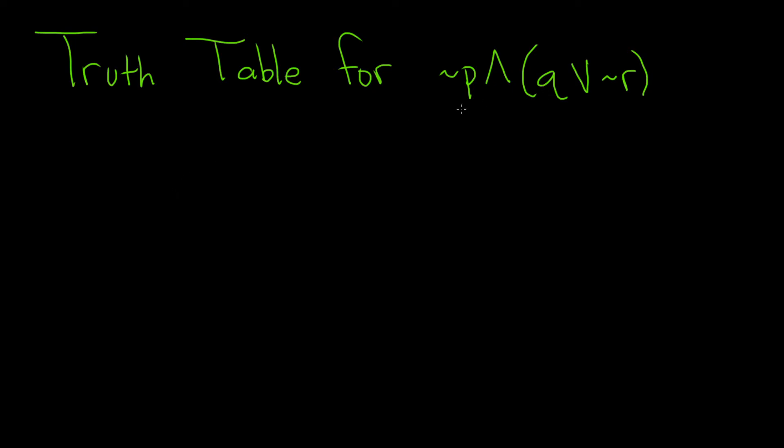In this problem, we're going to do a truth table for this statement. So we have three variables here, p, q, and r. So we'll start by listing all of the possible truth values for p, q, and r.